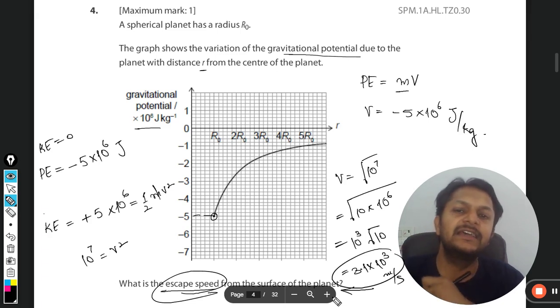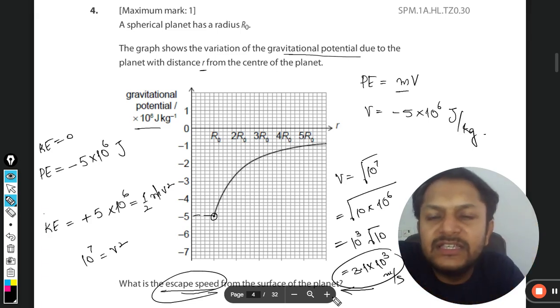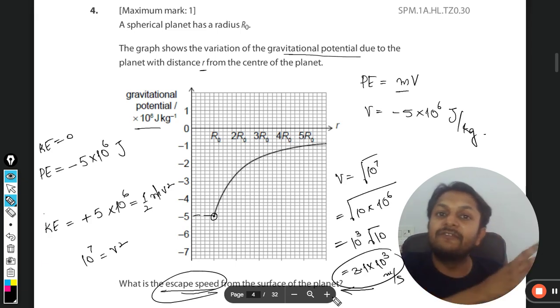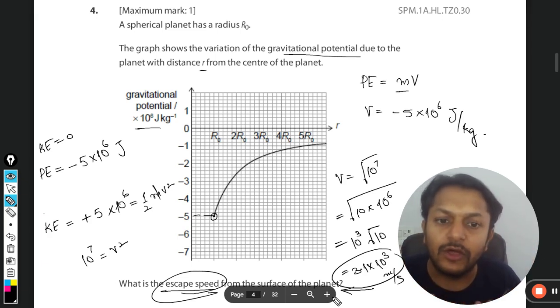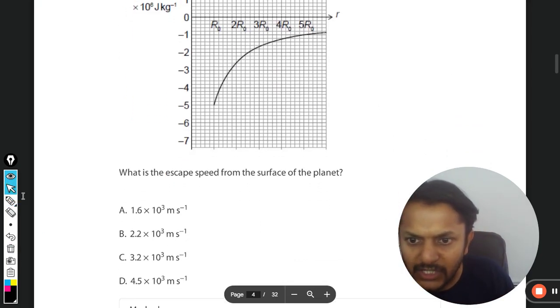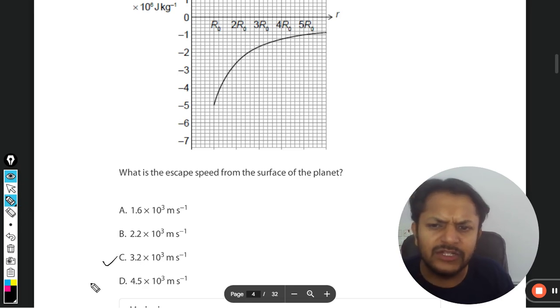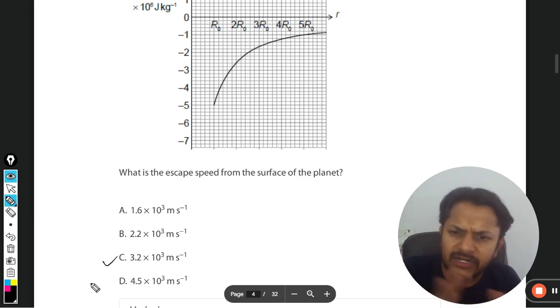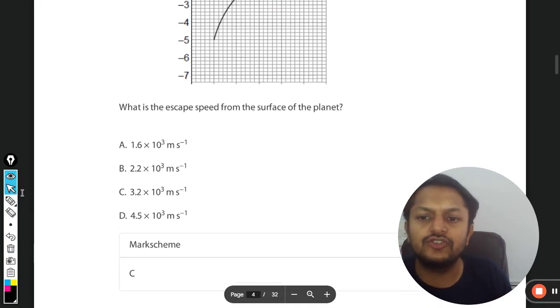If this much of the velocity is given to the body at this planet, the body will never return back. It will go out of the gravitational influence of the planet. Let's see what is the answer now. So I told you 3.1, so they have taken it to be 3.2 approximately 10^3. So C should be the correct answer and according to the mark scheme yes, this is how we do this.